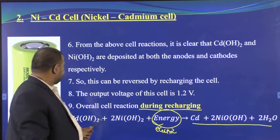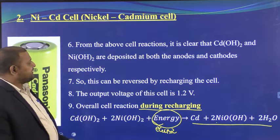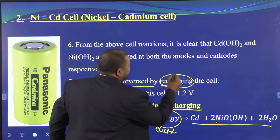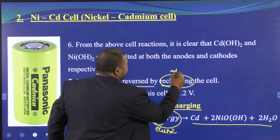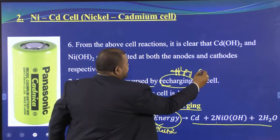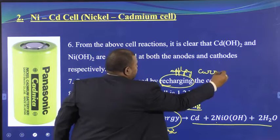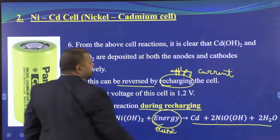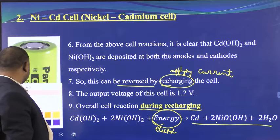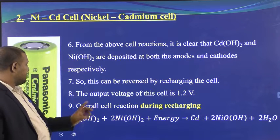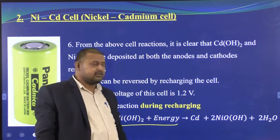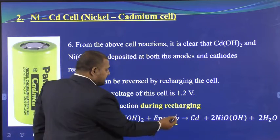From the above cell reaction, it is clear that cadmium hydroxide and nickel hydroxide are deposited at the anode and cathode respectively during discharge. This is reversed by recharging — recharging means applying a current by putting it in a charger — and the original reactants are regenerated.